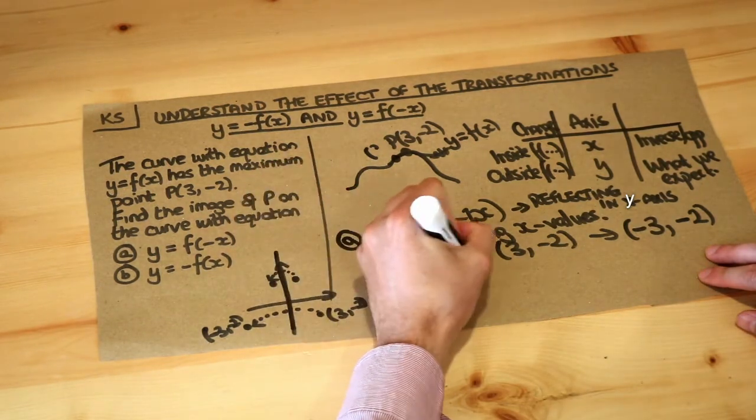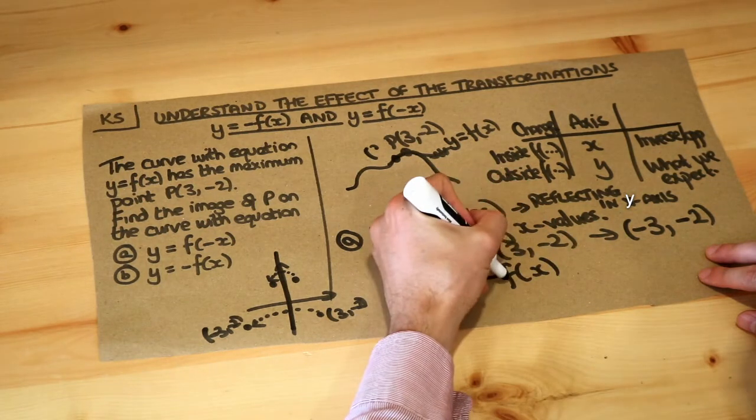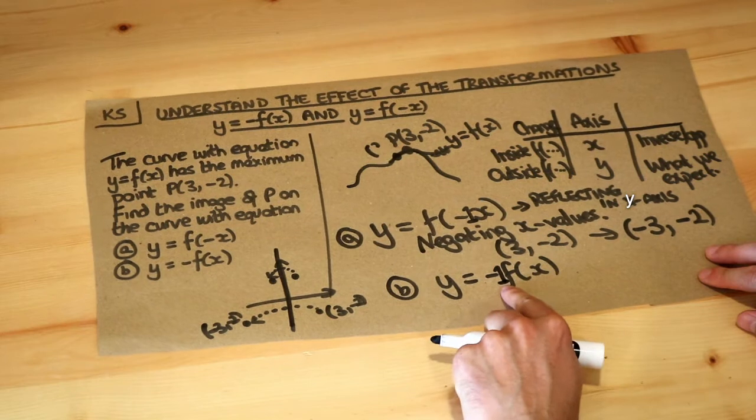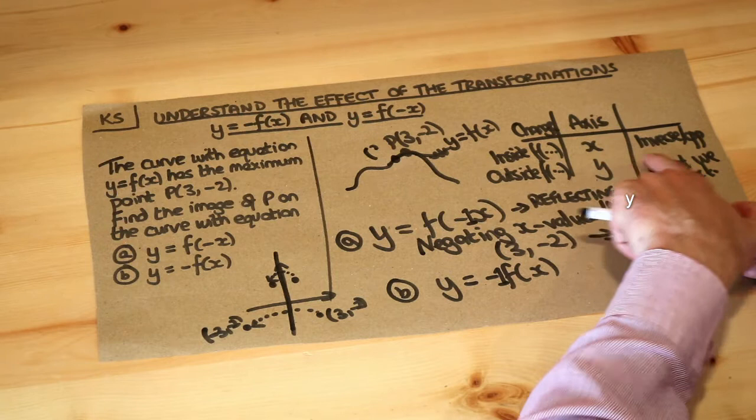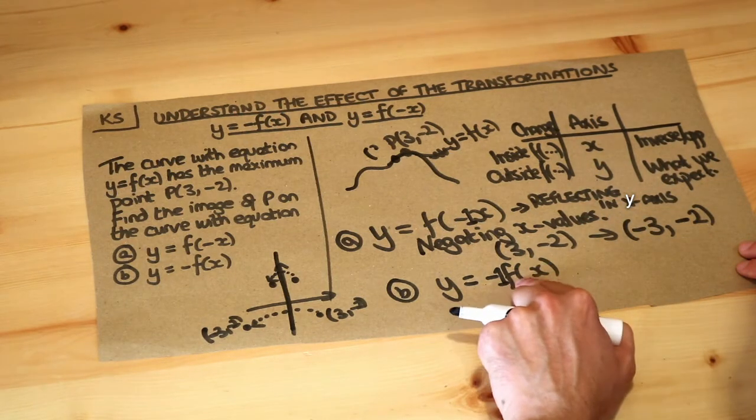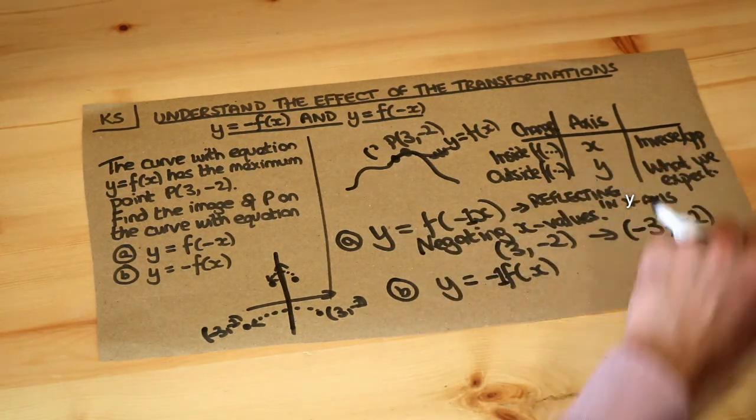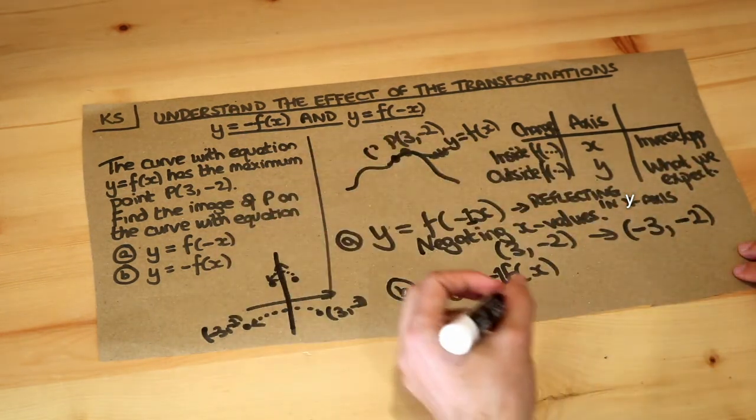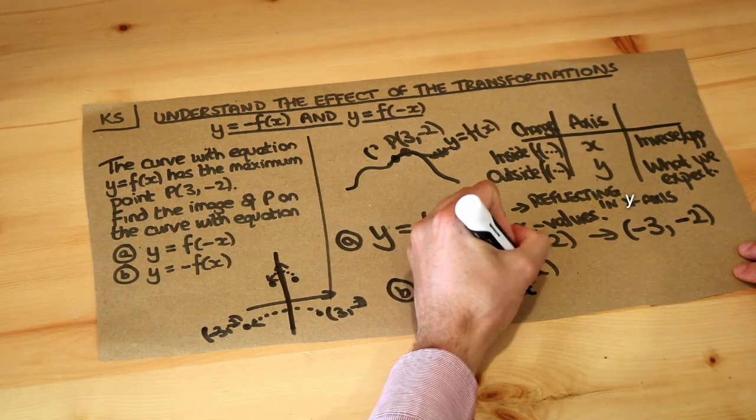If we had y equals minus f of x, this change, you can think of it as timesing by minus 1, this change is outside the function, it's outside the function brackets so it's going to affect the y values and do what we expect. Well we're timesing this f of x by minus 1 so it's going to affect the y value and it does what we expect. We're going to times the y value by minus 1 so that's the effect of negating the y values.